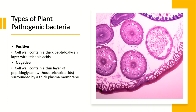Gram positive bacteria have a cell wall containing a thick peptidoglycan layer with teichoic acids. Gram negative bacteria, on the other hand, have a thin peptidoglycan layer surrounded by a thick outer plasma membrane, and this cell wall is without teichoic acids.